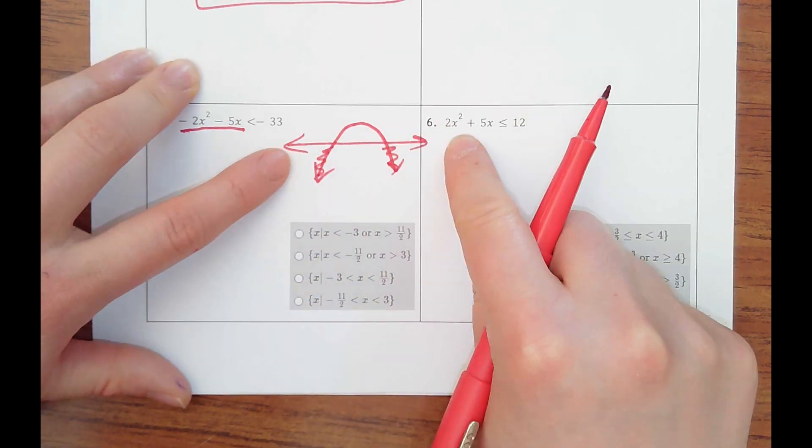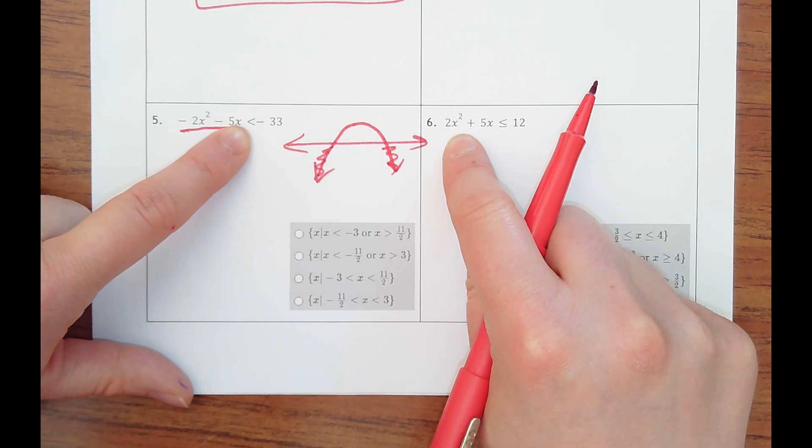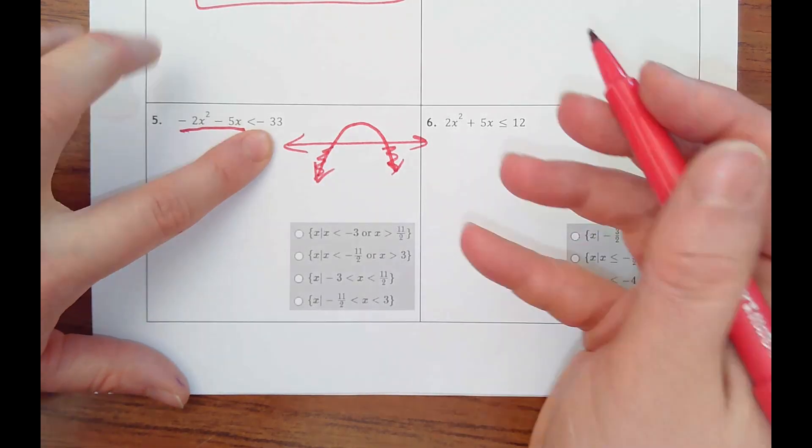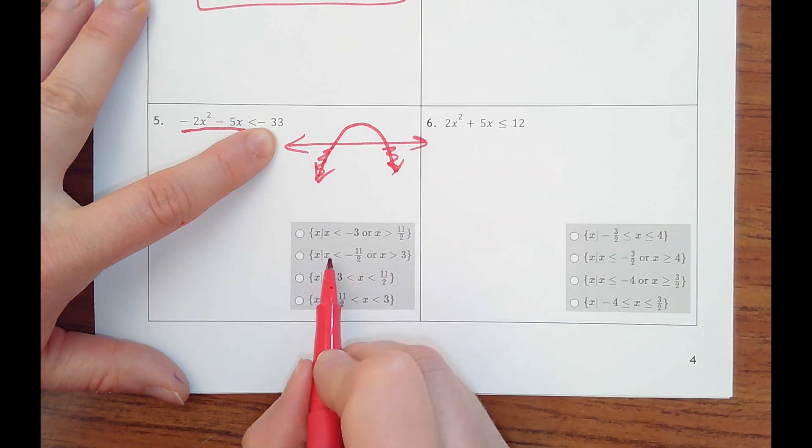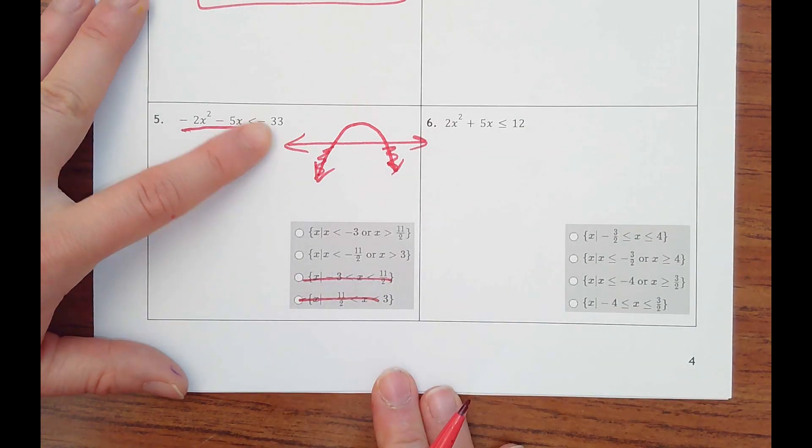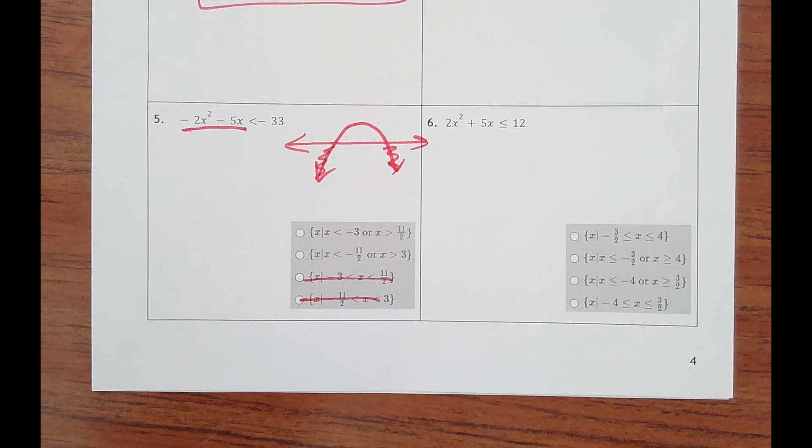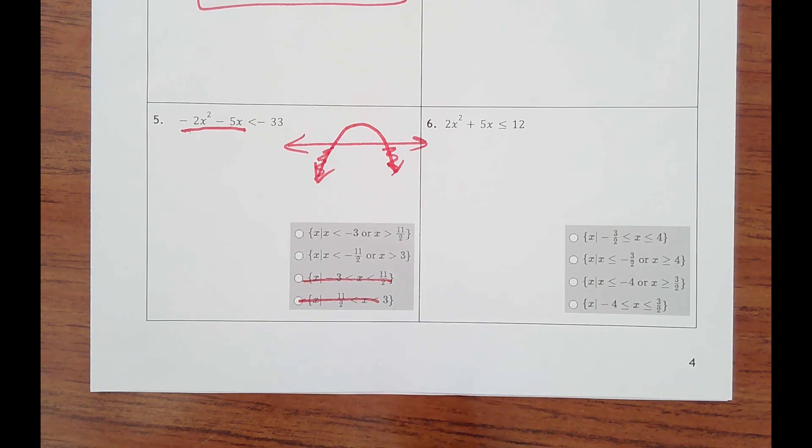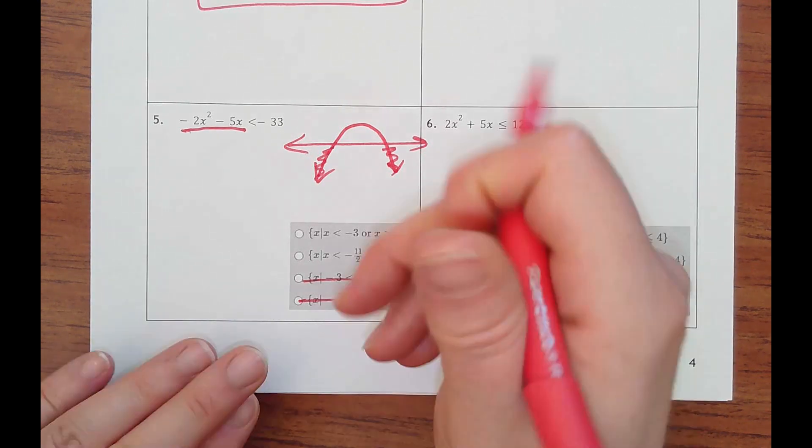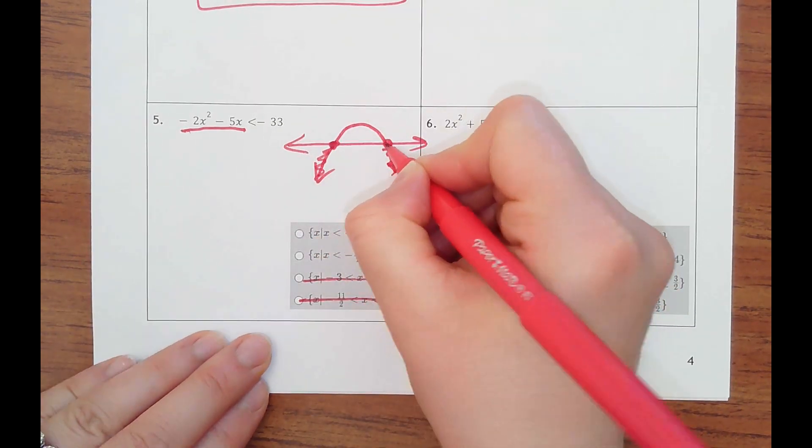That's actually going to be an or. So again, that's not going to stay an and because you would divide by a negative flipping the symbol. So right away I know it's not option three or four. Then it would be a matter of you just graphing or looking on Desmos and seeing where this x value is and this x value is.